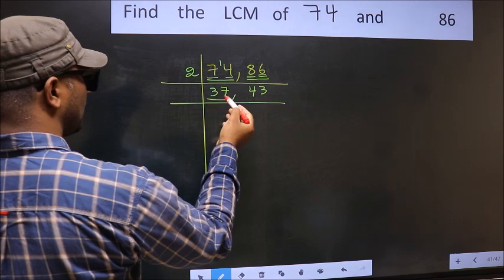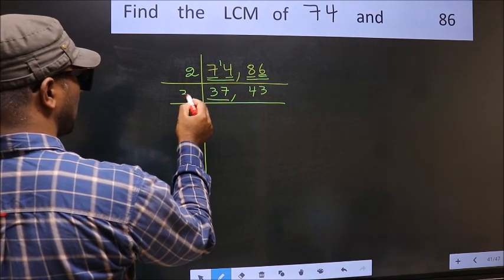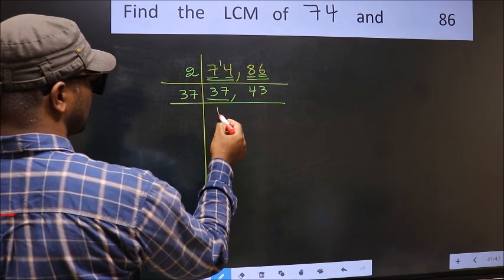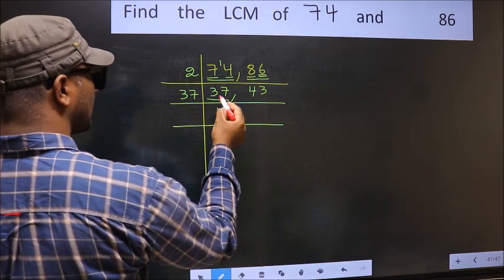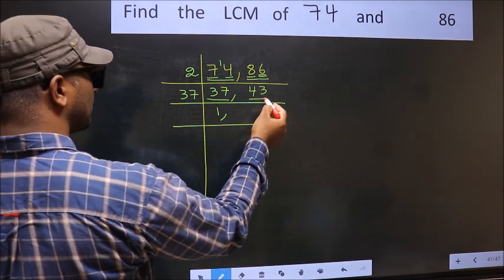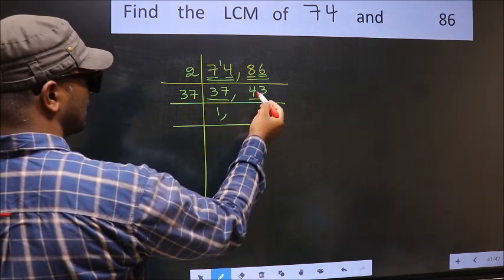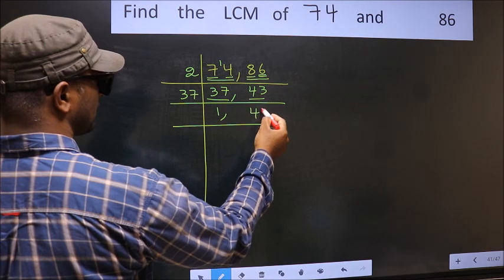Now here we have 37. 37 is a prime number, so 37 once is 37. The other number, 43, is not divisible by 37, so we write it down as it is.